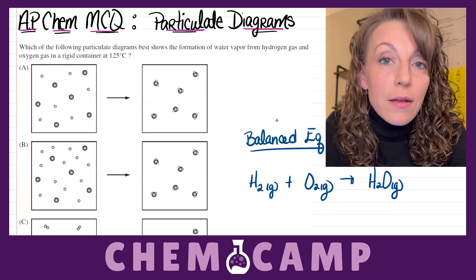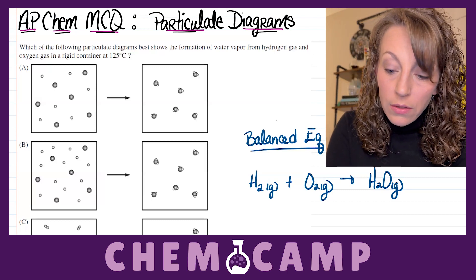Not only that, but we've got to make sure that equation is balanced. So if we take a look, we've got two hydrogen atoms on the reactant side and two hydrogen atoms on the product side.